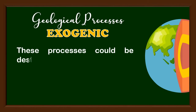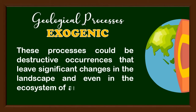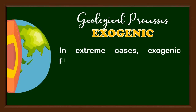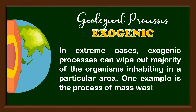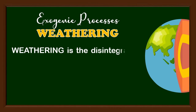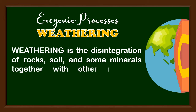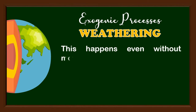These processes could be destructive occurrences that leave significant changes in the landscape and even in the ecosystem of an area. In extreme cases, exogenic processes can wipe out the majority of the organisms inhabiting a particular area. One example is the process of mass wasting. There are four types of exogenic processes. The first type is known as weathering — the disintegration of rocks, soil, and some minerals together with other materials through contact with the Earth's subsystems. This happens even without movement or transportation.